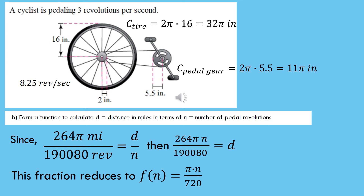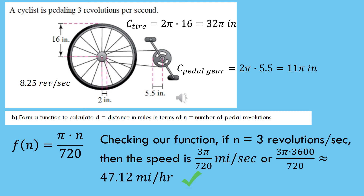Reducing that fraction — since 264 divides evenly into 190,080 — the function simplifies to f(n) = pi times n over 720. To verify, if we plug in three revolutions for n, we get 3 pi over 720 miles per second. Converting that to miles per hour by multiplying by 3,600 gives us 47.12 miles per hour, which matches our earlier result. So the function checks out — we already knew the bicycle was going 47.12 miles per hour at three pedal revolutions per second.